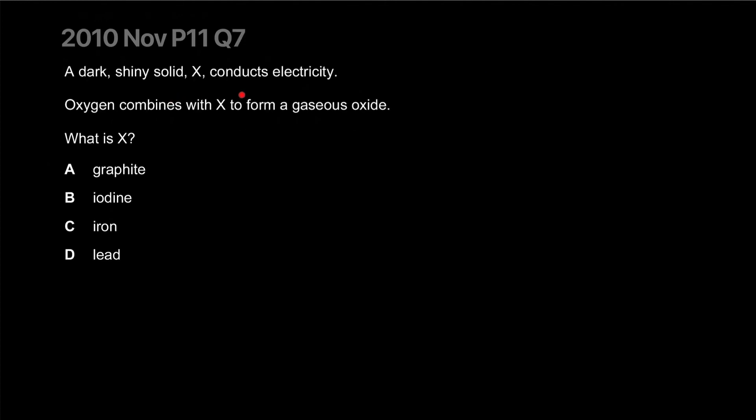A dark shiny solid X conducts electricity. Oxygen combines with X to form a gaseous oxide. What is it? It could be graphite as well. Graphite conducts electricity, gaseous oxide - definitely it's carbon. Metal oxides are not gaseous. Iron is out, iodine won't conduct electricity. A is our answer.